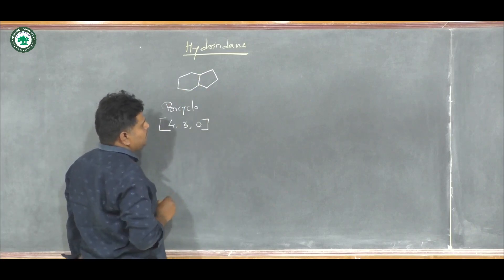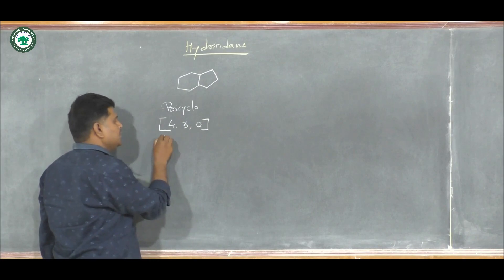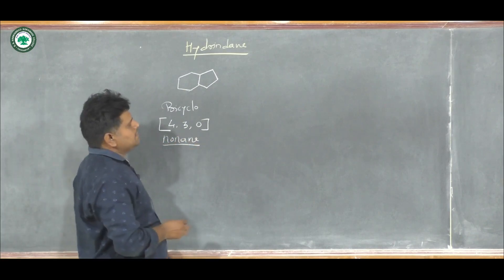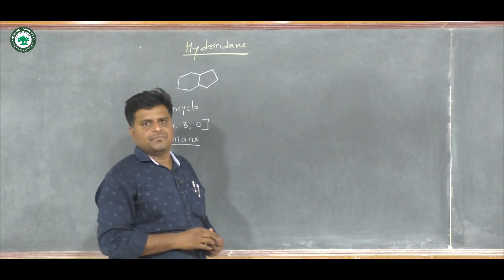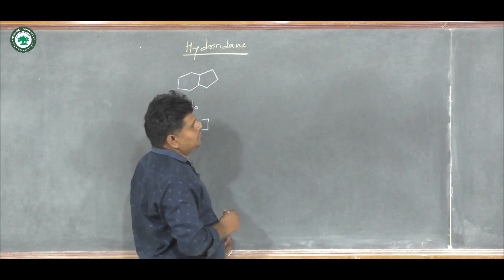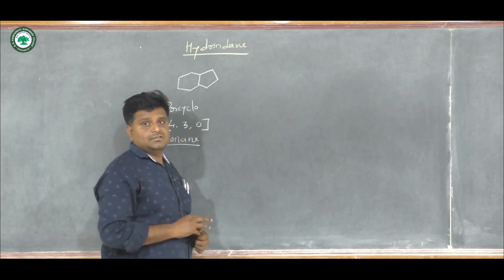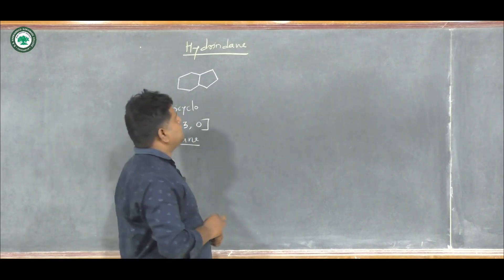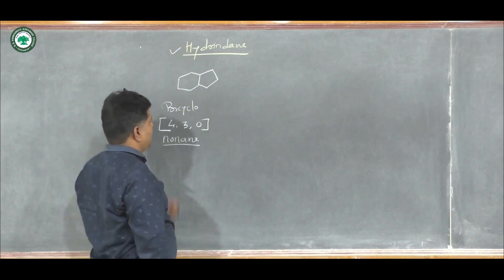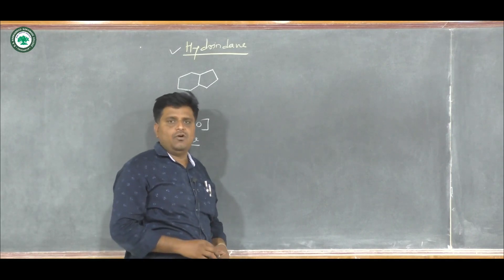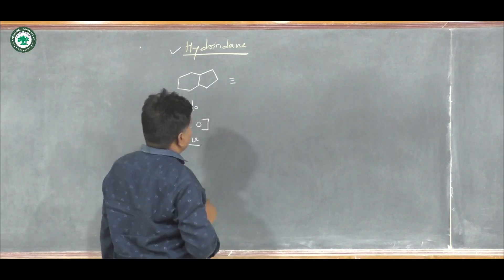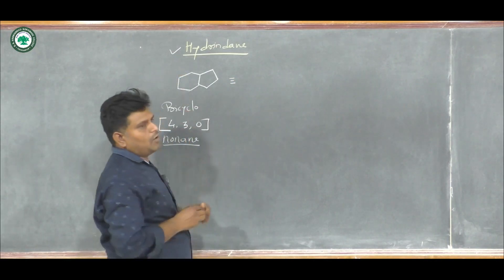These two common carbon atoms, when we add them, give us the total carbon count. So this is the IUPAC name for this compound, but it is more famously known by the common name hydrindane. So hydrindane is the common name for bicyclo[4.3.0]nonane.